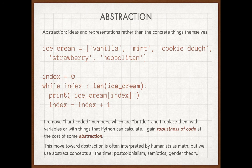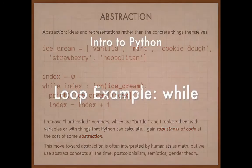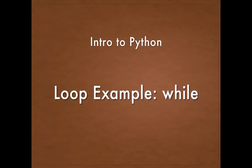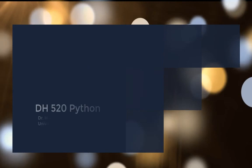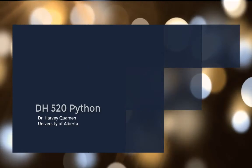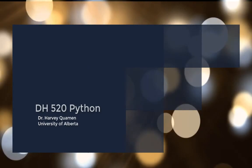We'll move on to the next video, which is going to look at exactly the same process — iterating a list — but using the second of Python's loop structures, which is called a for loop.